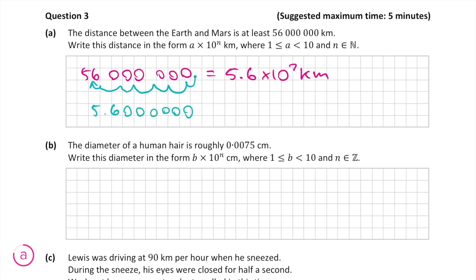When we do this we get 5.6 and because we move the decimal point 7 places this gives us 5.6 by 10 to the power of 7.